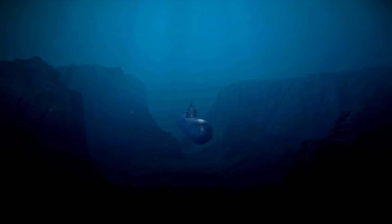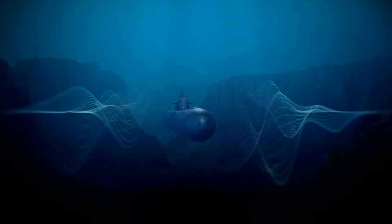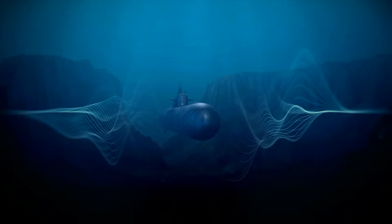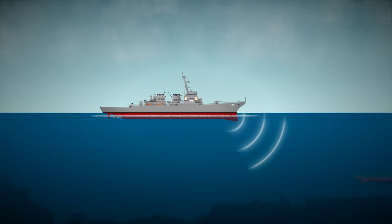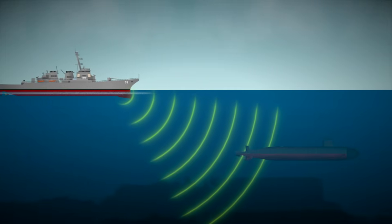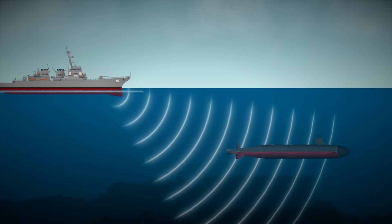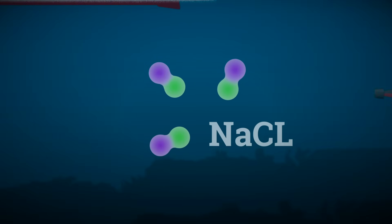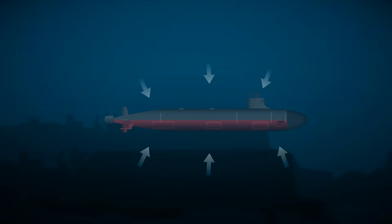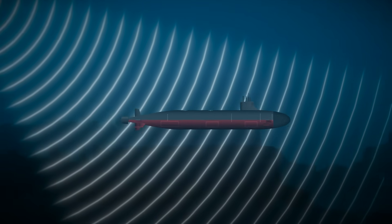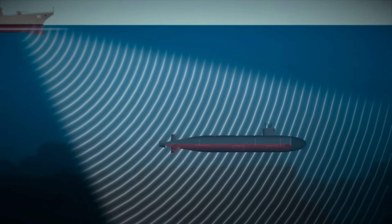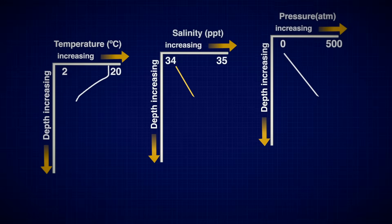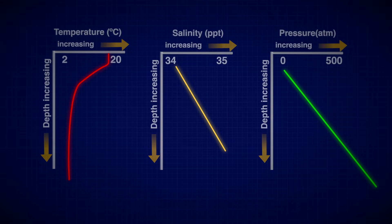Even the quietest submarine isn't truly invisible. But the ocean itself offers some great ways to hide if you understand how sound travels through it. The key lies in how the speed of sound changes in seawater. As was mentioned earlier, it's not constant. It depends on temperature, pressure, and even salinity. The deeper you go, the higher the pressure, which also increases sound speed. And saltier water makes sound move faster than it does in fresh water. These three variables combine to create a sound velocity profile that shows how sound speed changes with depth.